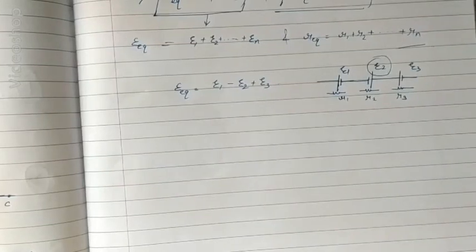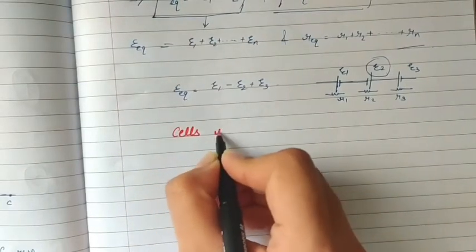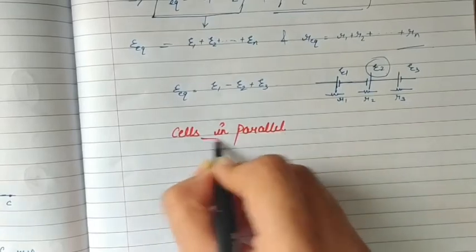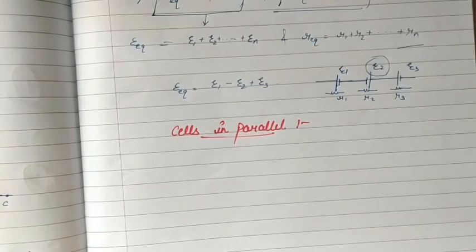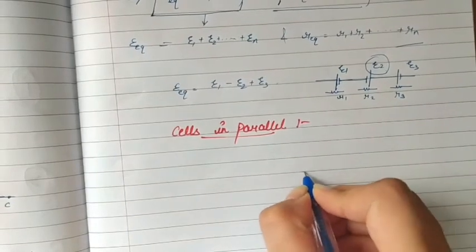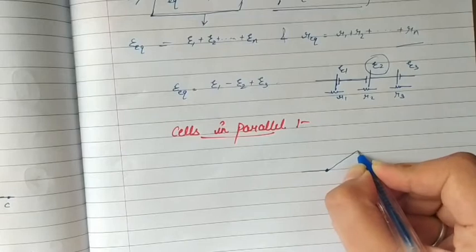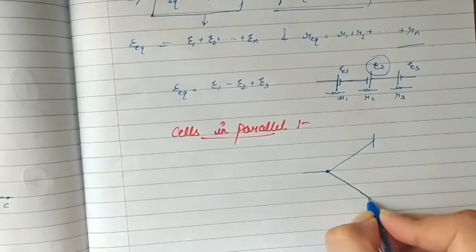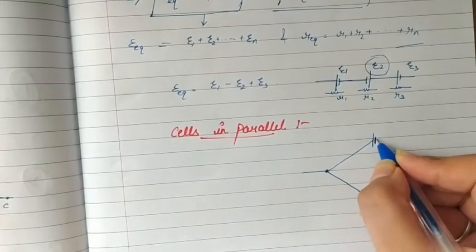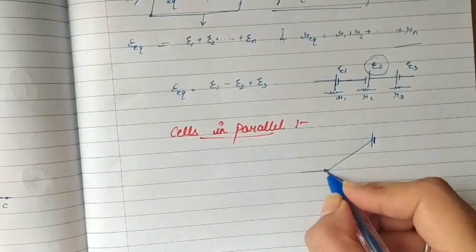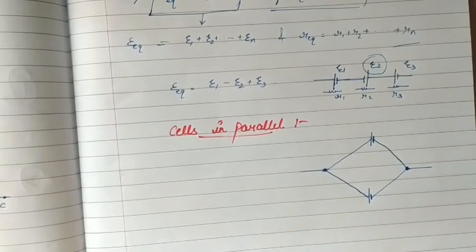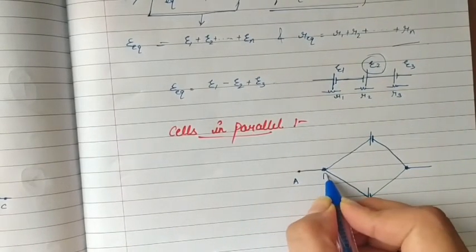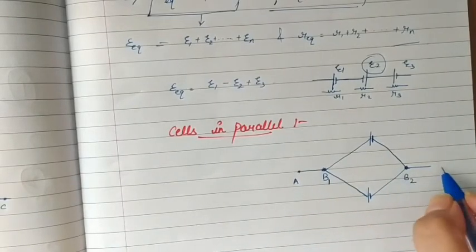Now let's talk about cells connected in parallel. In this case, the positive terminal of all the cells are connected to one point while their negative terminals are connected to another point. All cells' positive terminals are connected to one point while the negative terminal is connected to another point. Here I am taking two cells with positive terminals connected to one point and negative terminals to another point. Let's name these points as point A, point B1, point B2, and point C.